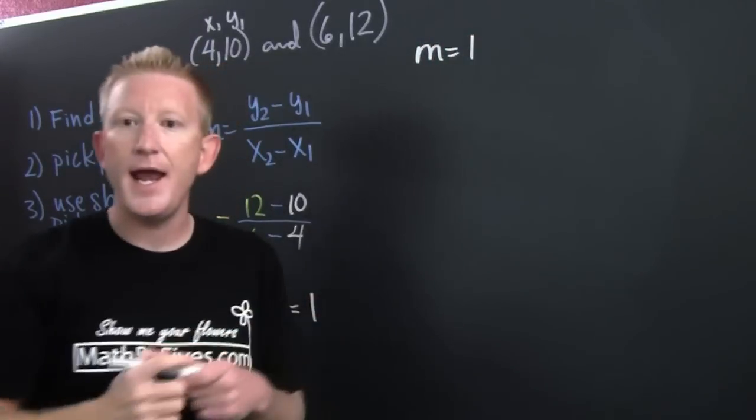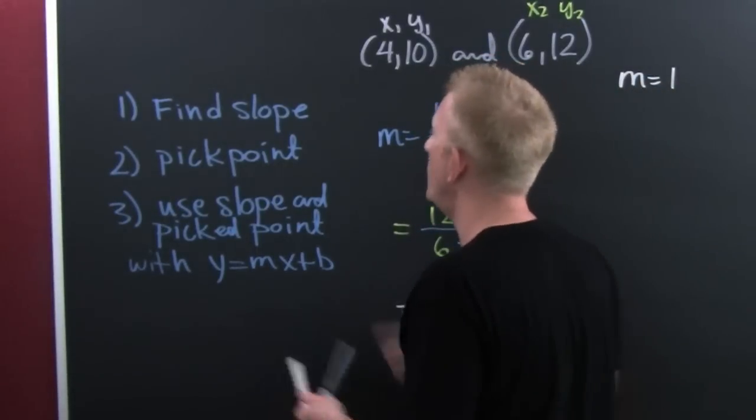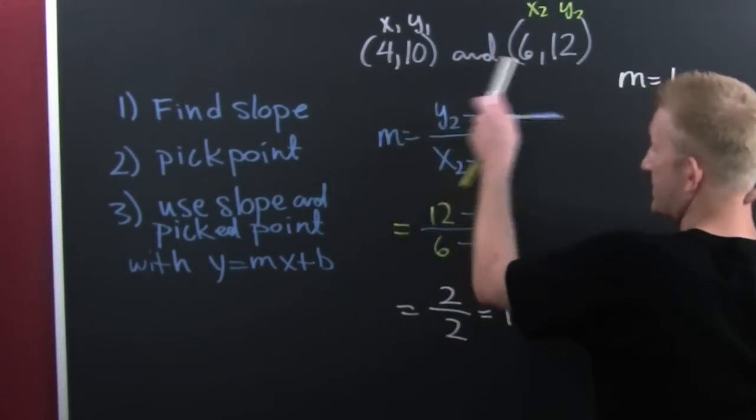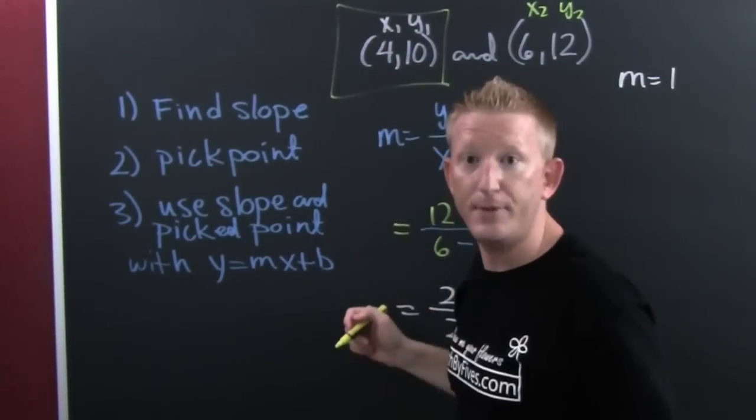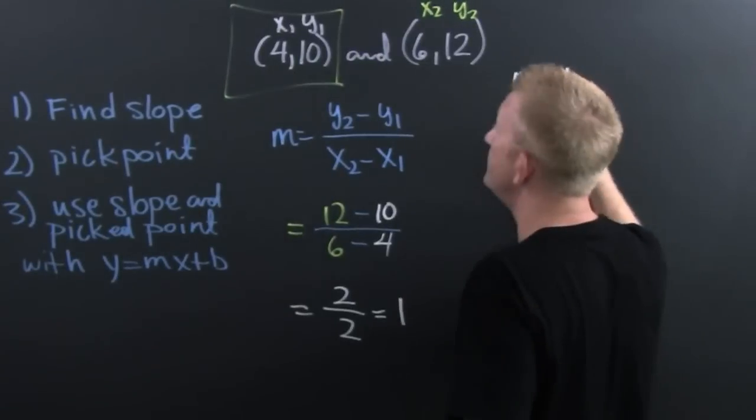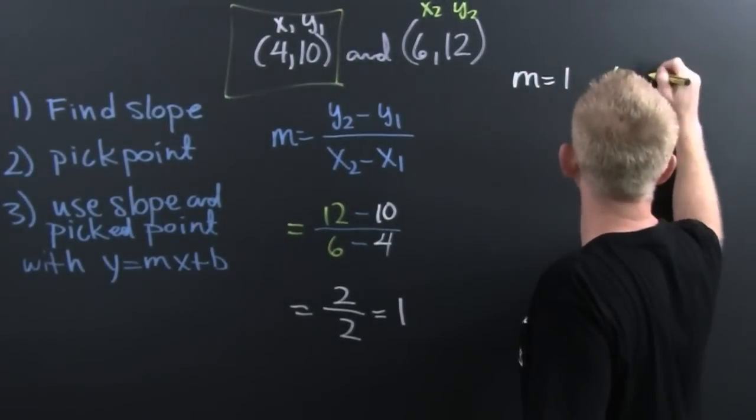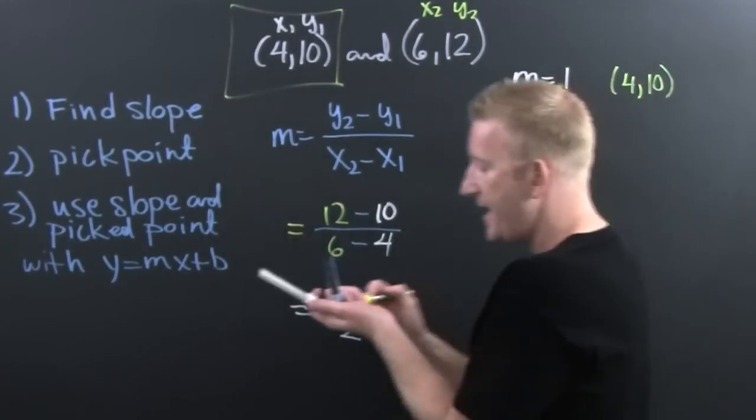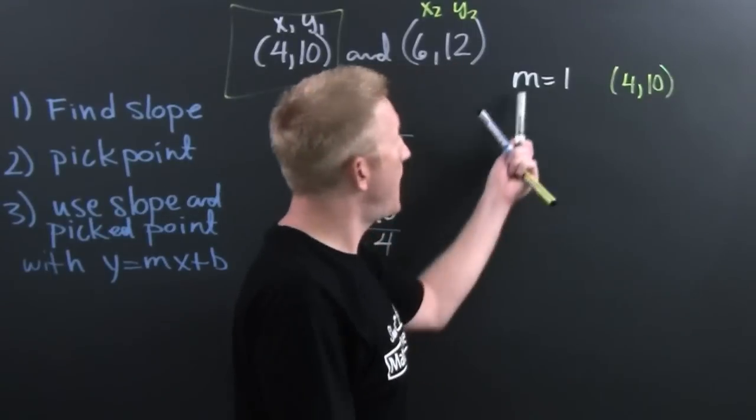So now you have a slope which is 1, and you need to pick a point. But which point? One of the original points. It doesn't matter which you pick, so I pick you. So now we have a slope and a point. That point is (4, 10).